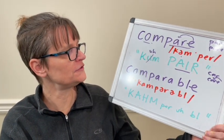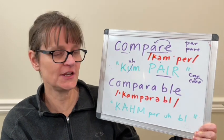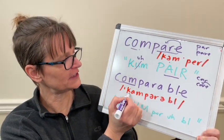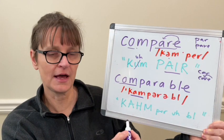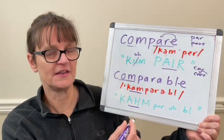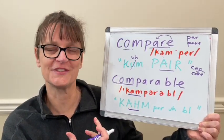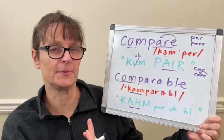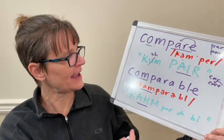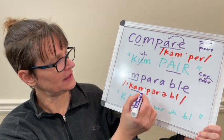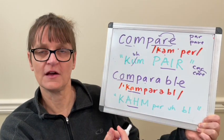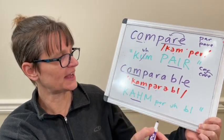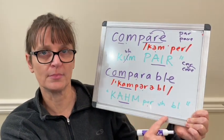When we move to 'comparable,' that changes, and our stress falls on the first syllable — 'com.' So now the letters C-O-M have the letter O saying the 'ah' vowel, the open unrounded 'ah': 'comparable.' And because the second syllable A-R is now unstressed, it changes to an 'er' sound: 'com-per,' 'comparable.'